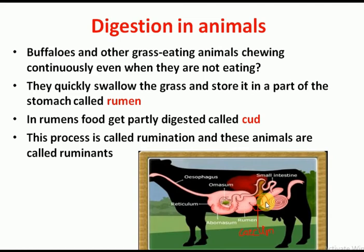Ruminants like buffaloes and cows consume grass. Grass contains cellulose, which is also digested with the help of the cecum. These animals are called ruminants.